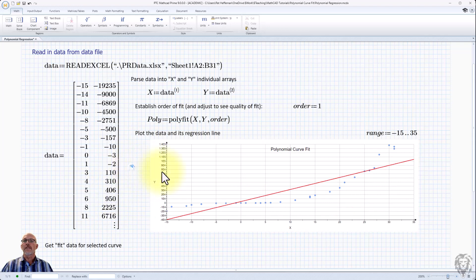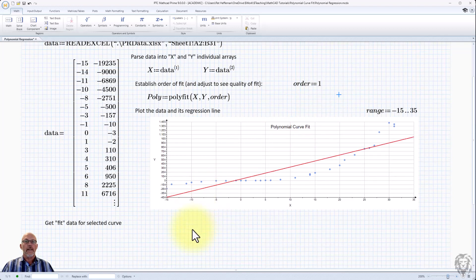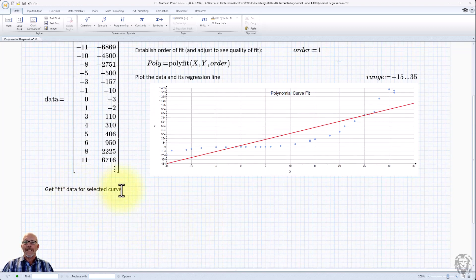And so you see it's tried to do a first order fit. And of course, if I change that order to two, it's going to do a second order fit and whatnot. Now, I wanted to show you, before we get carried away here, go down here and get the fit data.